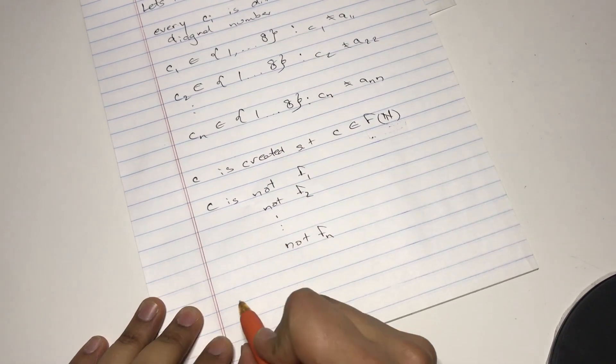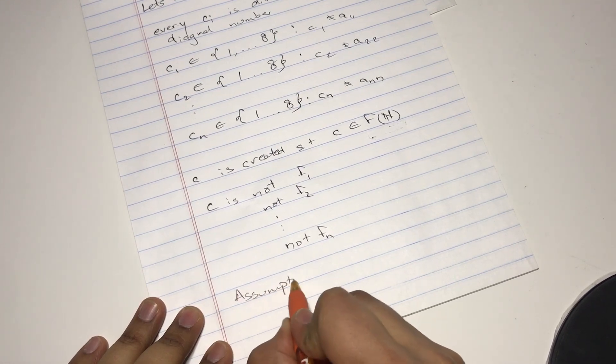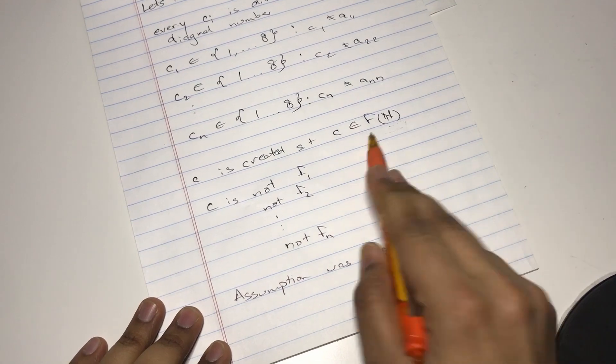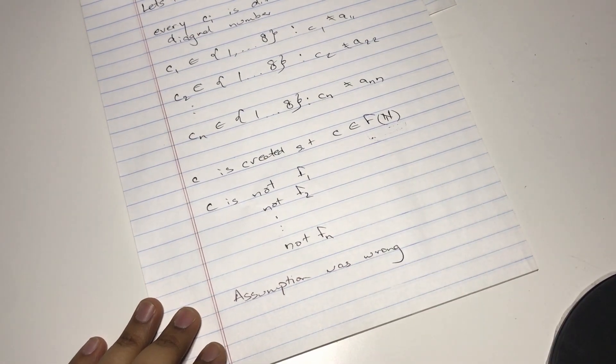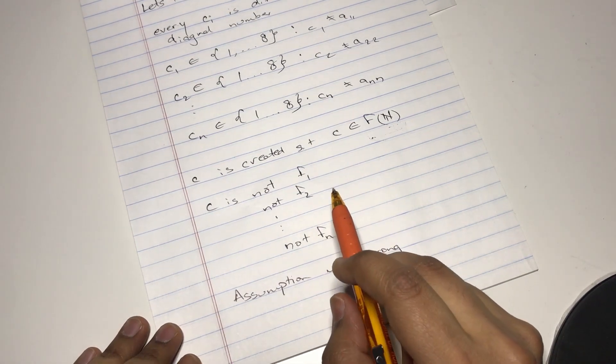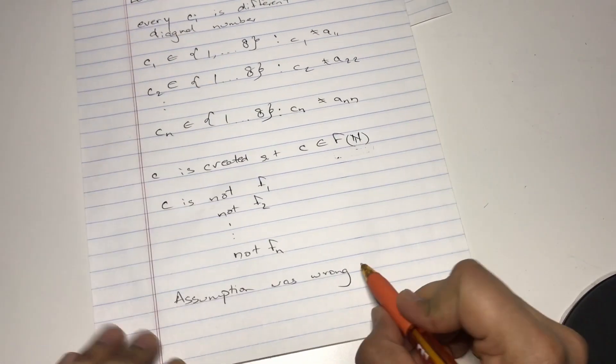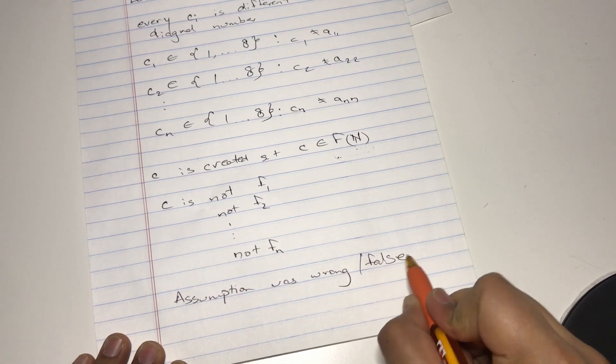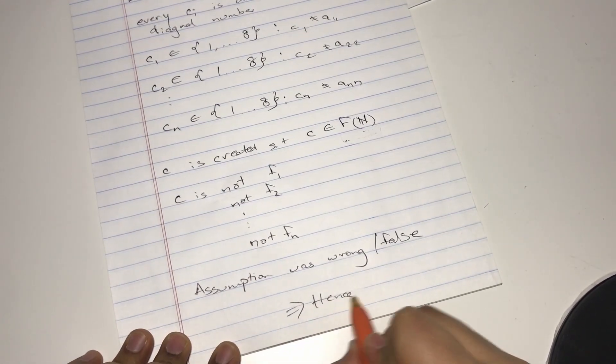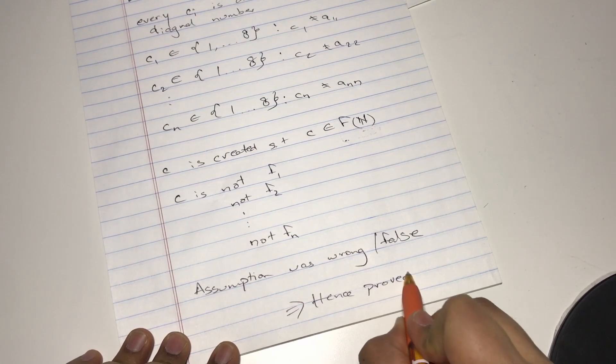So our assumption was wrong. This is not a bijective function. So f is not bijective, and that means our assumption was wrong or false. Hence proved.